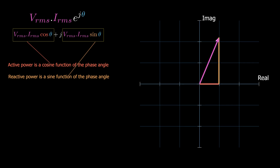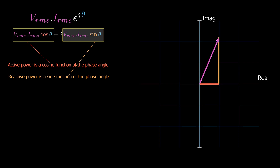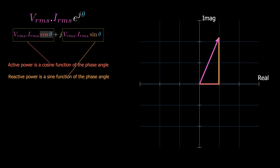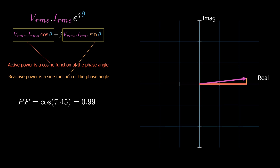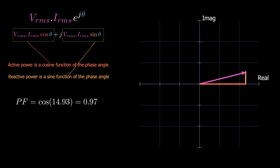In my AC power analysis video, I explained that active power is the only useful power dissipated in a load; reactive power just bounces back and forth between the source and the load. Active power is the apparent power times cosine of the phase angle. Cosine of the phase is called the power factor — a term that determines how much of the complex power is useful. A power factor of 1 means the phase angle is zero and all power is active with no reactive power. A power factor of 0 means the phase angle is 90 degrees and all power is reactive with no active power. In electrical engineering, we tend to design systems with a power factor as close to 1 as possible.